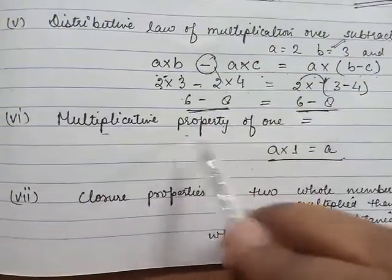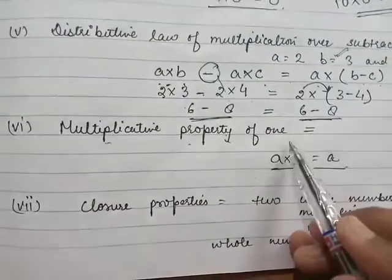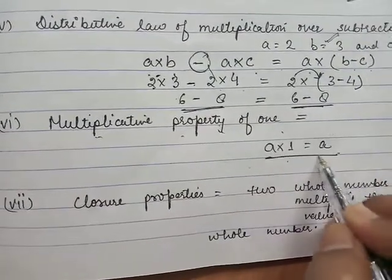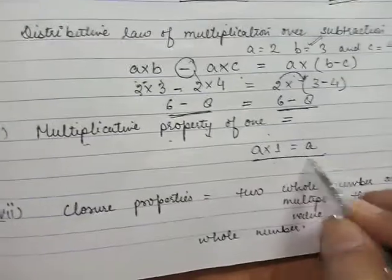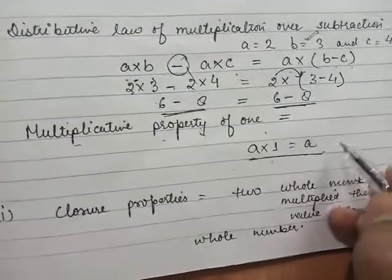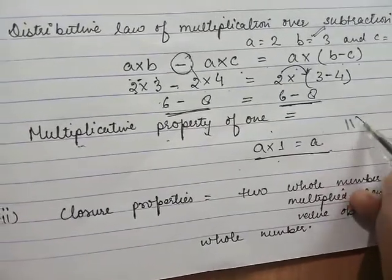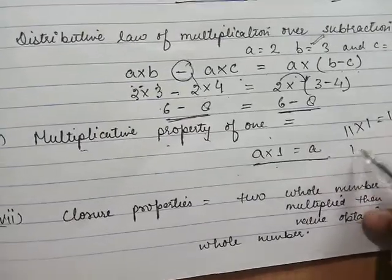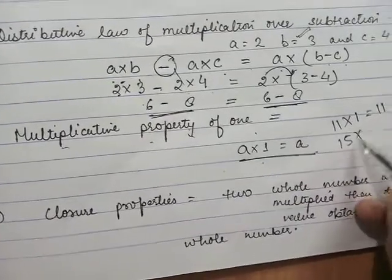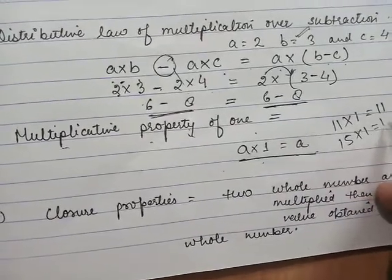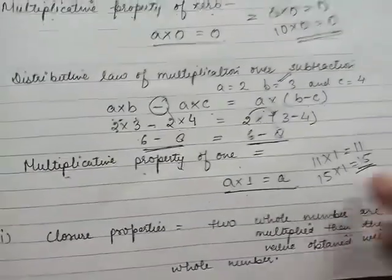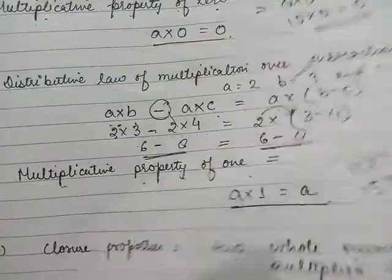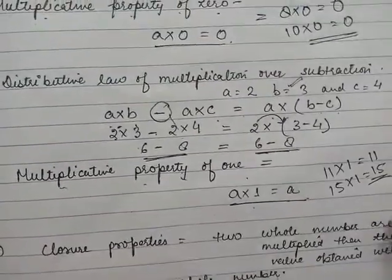Next is the multiplicative property of 1. If 1 is multiplied by any number, the answer will be the number itself. For example, 11 × 1 equals 11, and 15 × 1 equals 15. So if we multiply 1 by any number, the answer will be that number only.